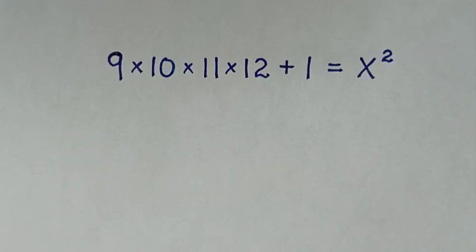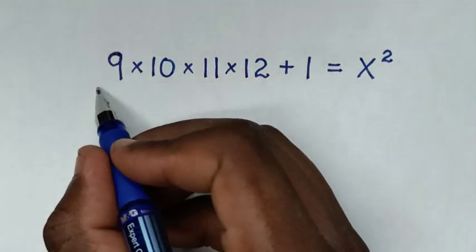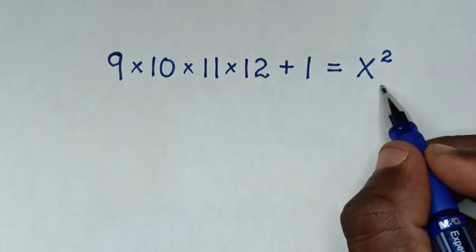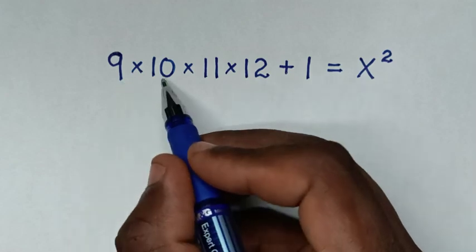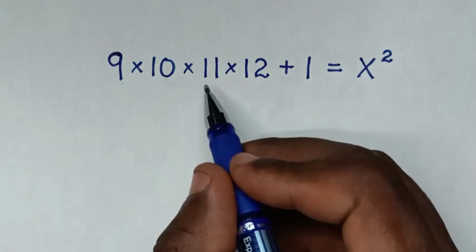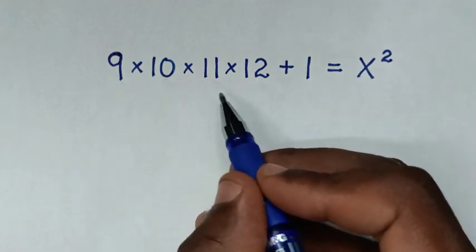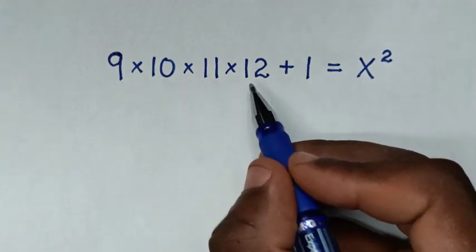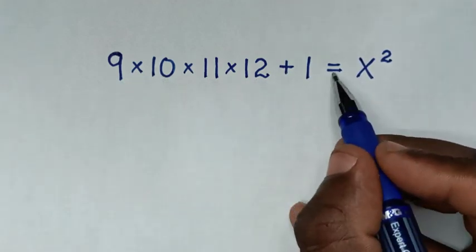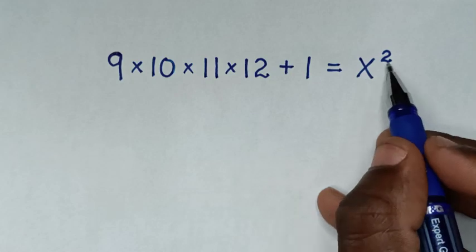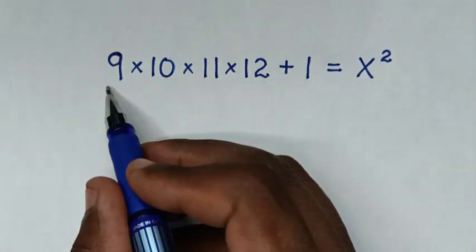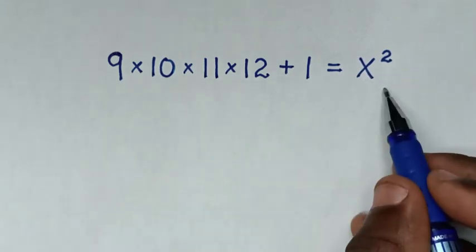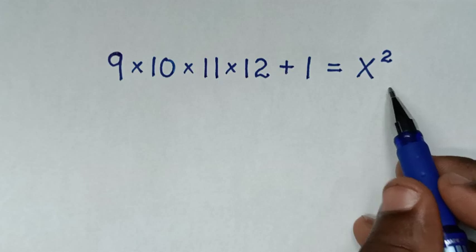Hello, you are welcome to solve this math problem which is 9 times 10 times 11 times 12 plus 1 is equal to x squared. Find the value of x from this equation. Now in the first step,